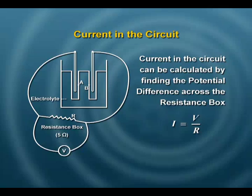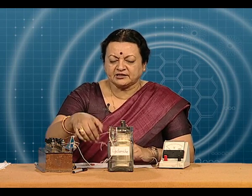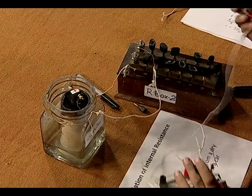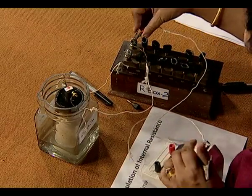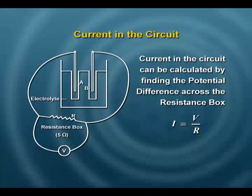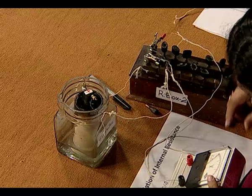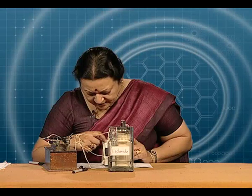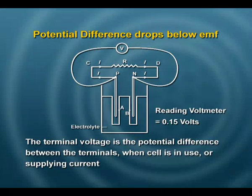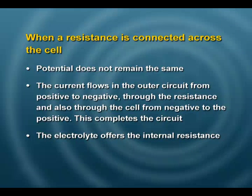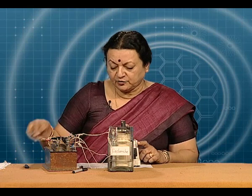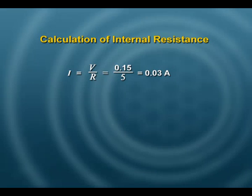I am going to use Ohm's law and find out how much current is flowing in the circuit by finding out the potential difference across these two terminals. I have 5 ohms there and the potential difference here is 0.15 volt. So the current would be V upon R, which will be 0.15 divided by 5. This value of current will be 0.03 amperes.